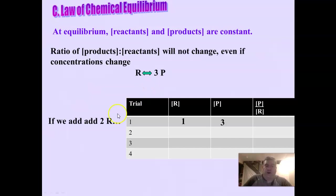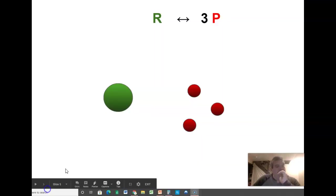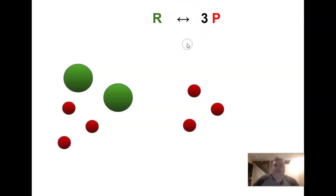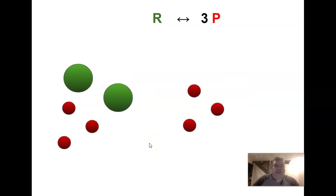Now we're going to add two more reactants to our original one-to-three ratio. Adding more reactants should shift equilibrium over to products — but how far? One of the reactant molecules turns into products, giving us a two-to-six ratio. It'll go back and forth, but since they're changing at the same rate, we always maintain this two-to-six ratio. We then add two more reactants, and we end up with a three-to-nine ratio.